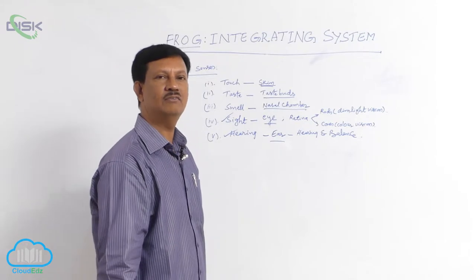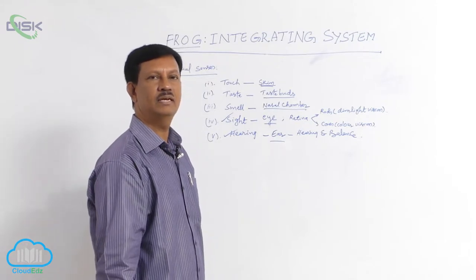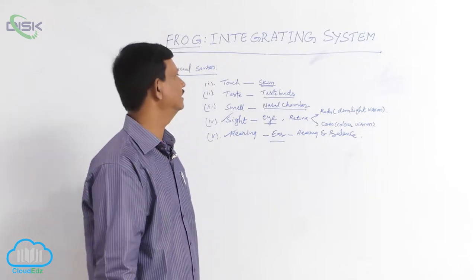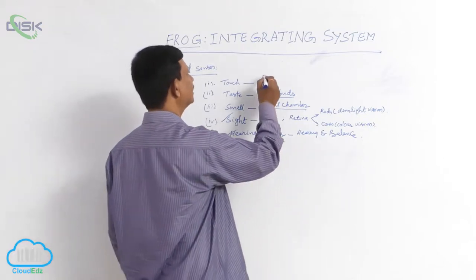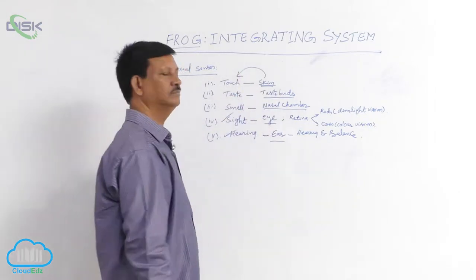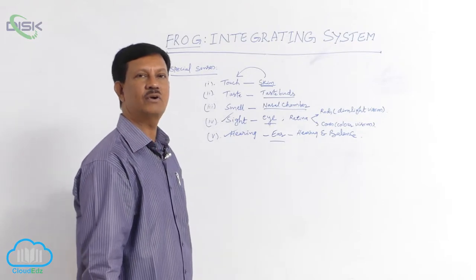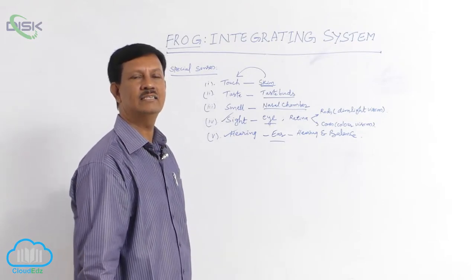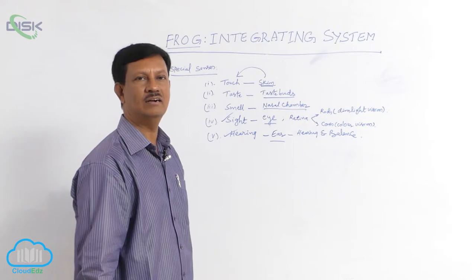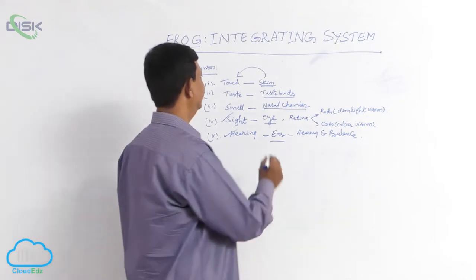The frog's body is covered by skin. Some receptors are found in the skin. Those receptors are sensitive to touch. Hence, frog skin acts as a sense organ.